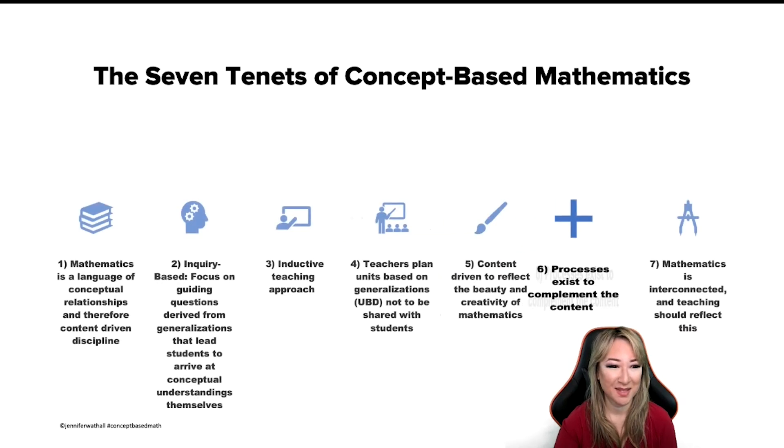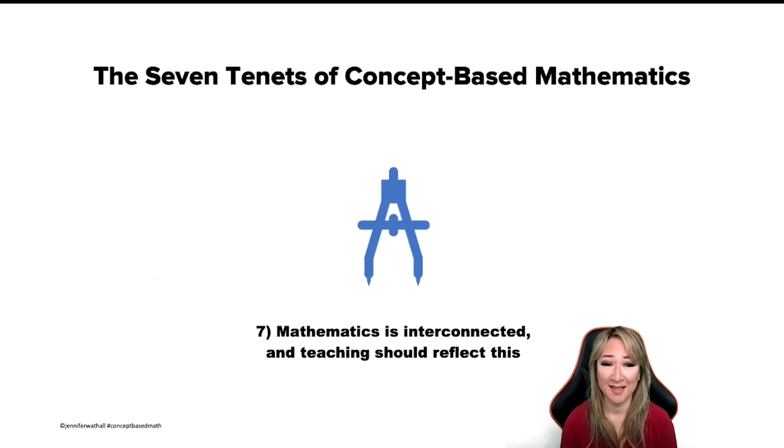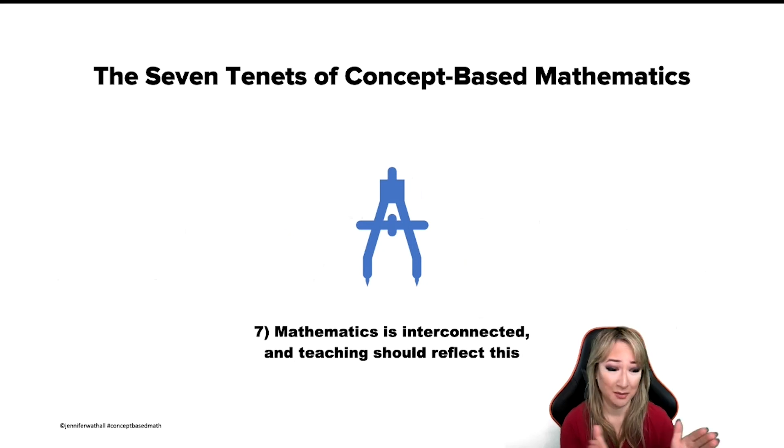So what's the last tenet? The last one is that mathematics actually is interconnected, and our teaching should reflect that. Trying to teach mathematics in these discrete topics of algebra separately, geometry separately, is actually quite artificial for mathematicians. Mathematicians actually see mathematics as an interconnected web of different ideas. So in your units, try to reflect that interconnectedness. Let me give you an example. If we were having a look at the topic of fractions, decimals and percentages, already we're showing the interconnectedness of those three types of number, but maybe trying to interconnect the topic of data handling so that the fractions, decimals and percentages actually has a context for students to be able to understand deeper. So they're my seven tenets here.